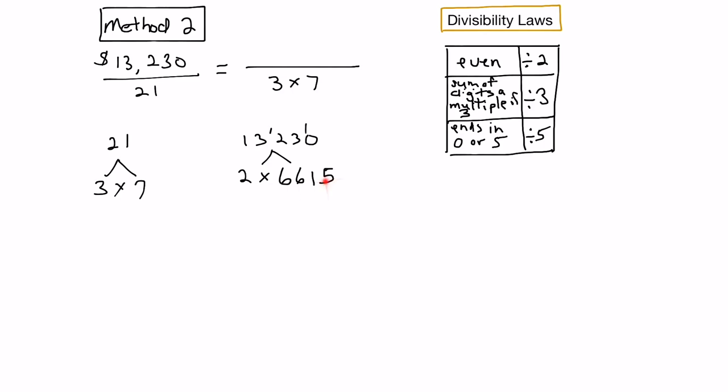We repeat the process with 6,615. Is it even? No, because it ends in 5. Let's sum up the digits: 6 plus 6 is 12, plus 1 is 13, plus 5 is 18. Is 18 a multiple of 3? Yes it is, so it must be divisible by 3. We can write this as 3 times some number. We divide 3 into 6,615. 3 into 6 goes twice, 3 into 6 goes twice again, 3 into 1 doesn't go so we carry the 1, and 3 into 15 goes 5 times, giving us 2,205.